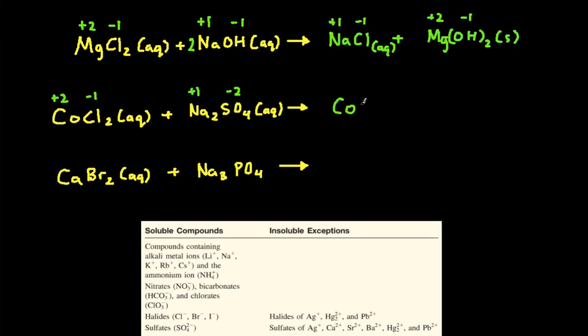And that's going to give us cobalt sulfate and sodium chloride. Notice that the positive charge always goes first, and that's always the case when you're working with ionic compounds.